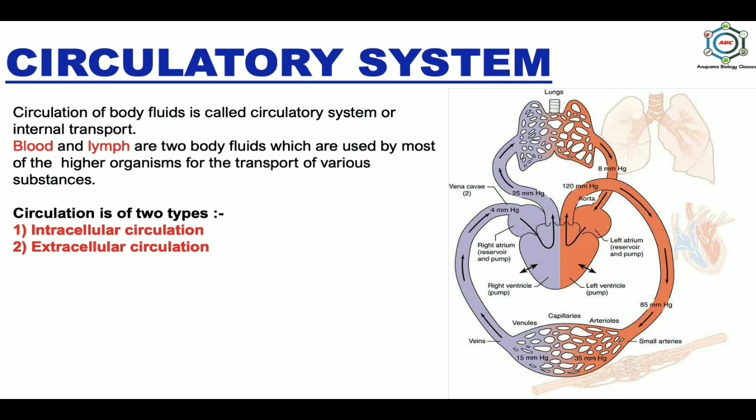Circulation is of two types: intracellular circulation, where circulation occurs inside the cell and is found only in unicellular organisms like paramecium, amoeba, and euglena; and extracellular circulation, which occurs outside the cell in multicellular organisms. The circulatory system does a very important job — it carries O2 and essential nutrients to all cells through arteries and carries waste products and CO2 through veins.